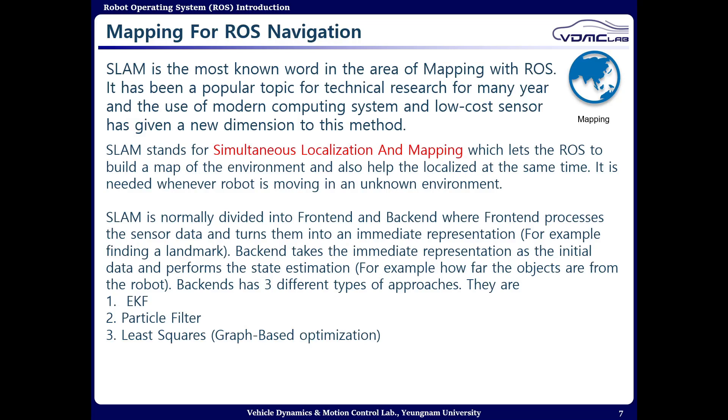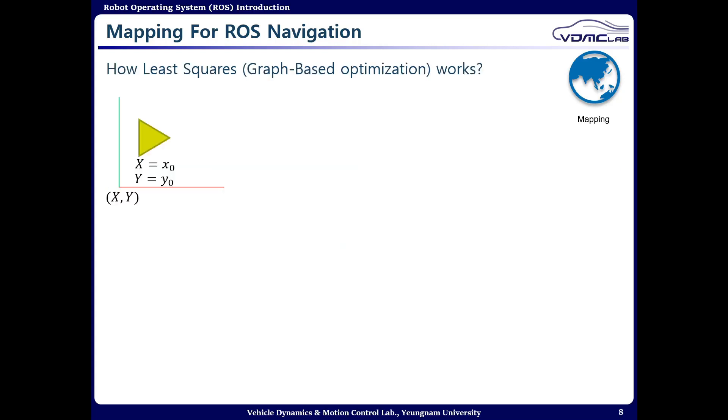Backend takes the immediate representation as the initial data and performs initial data, for example how far the object is from the robot. Backend has three types of approach, and within that EKF extended Kalman filter, particle filter, and least square method which is also known as graph-based optimization are very popular. As in our robot we have used the graph-based optimization, I am going to explain about this method a little bit.